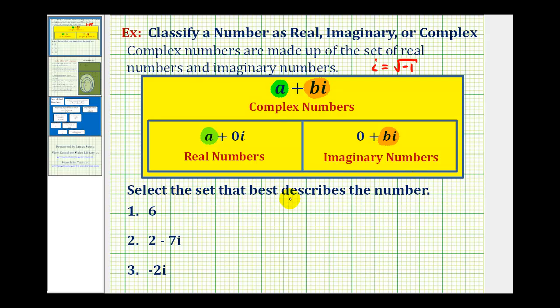So when it says select the set that best describes the number, all the numbers will be complex, but if we can say a number is a real number or an imaginary number, these would be the sets that best describe the number because it provides more details about that number. Let's take a look at our examples.